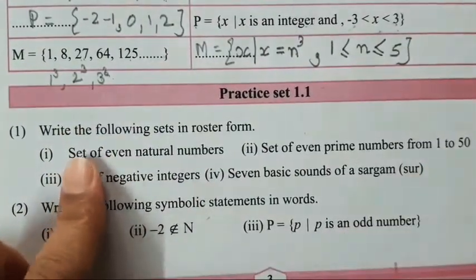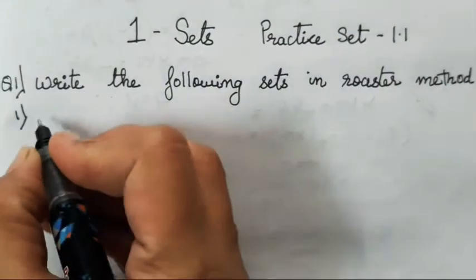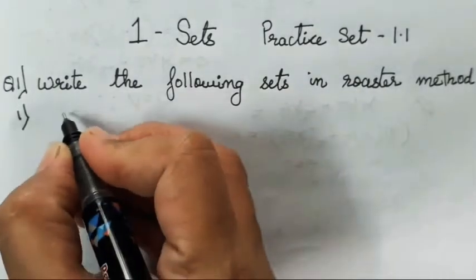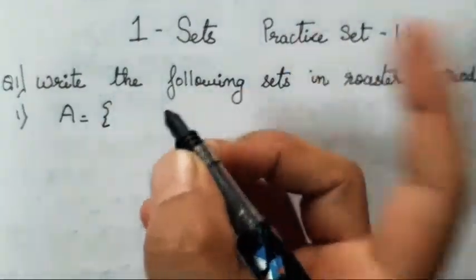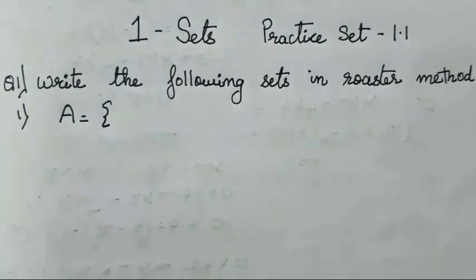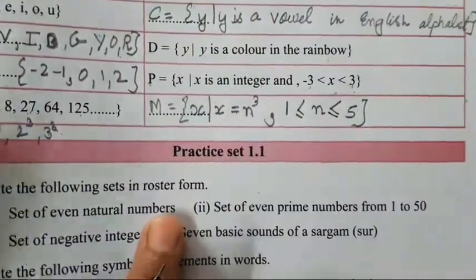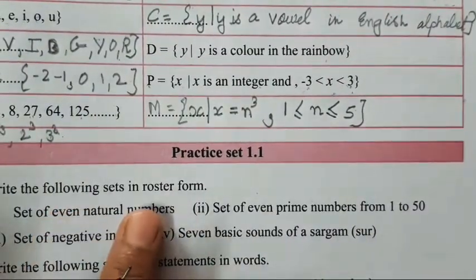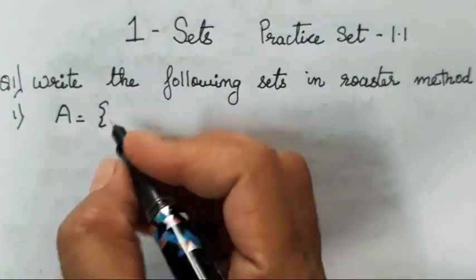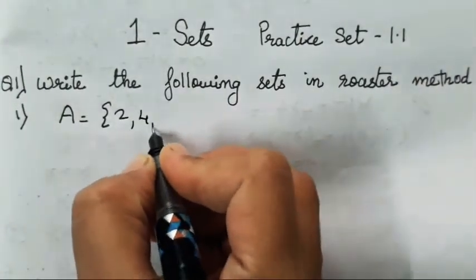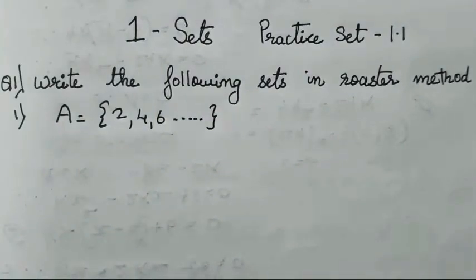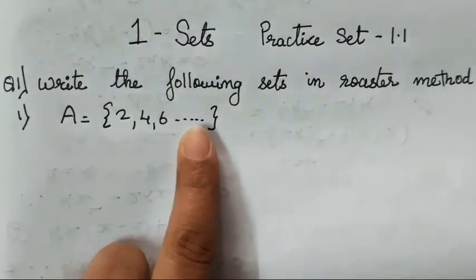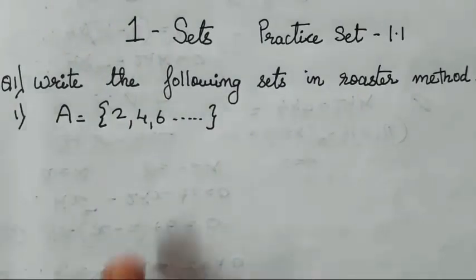The first question is: set of even natural numbers. I will write the answer directly. You all can write any variable of your choice. Curly bracket — even natural numbers. They haven't given any definite numbers or any limit, so you all have to write starting from 2, 4, 6, and so on, with dot dot dot to show it is continued. So this is the first answer.